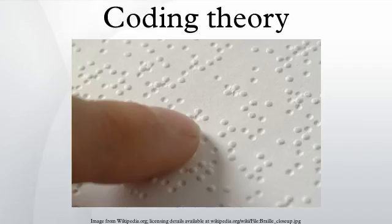Perfect codes: block codes are tied to the sphere packing problem, which has received attention over the years. In two dimensions it is easy to visualize — take a bunch of pennies flat on a table and push them together; the result is a hexagon pattern like a bee's nest. But block codes rely on more dimensions which cannot easily be visualized. The powerful Golay code used in deep space communications uses twenty-four dimensions.